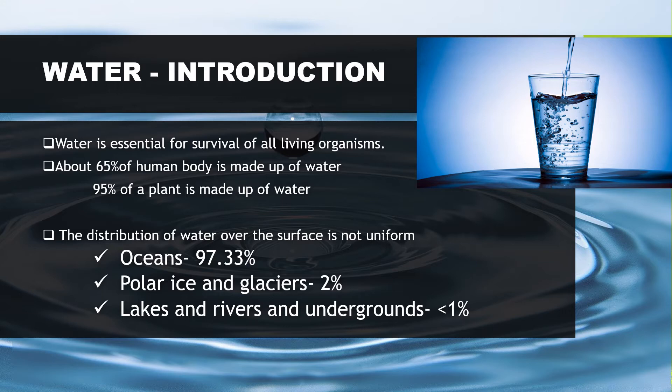Oceans contain 97.33%. Only 2% of water on the earth's surface is in the form of polar ice and glaciers. The remaining water, which is less than 1%, is present in lakes, rivers and underground waters.